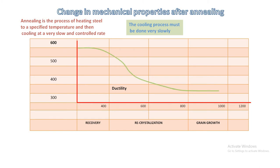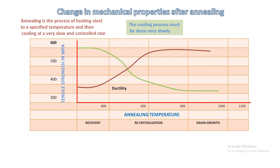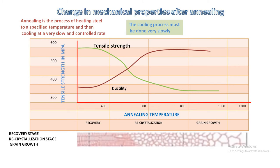There are three stages of annealing. The first stage is the recovery stage. In this stage the furnace or other heating device is used to raise the temperature of the material to such a point that the internal stresses are relieved.